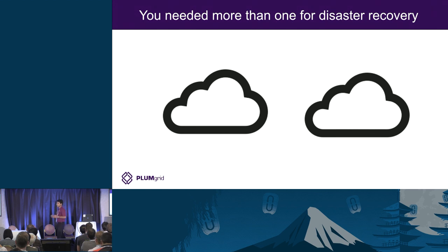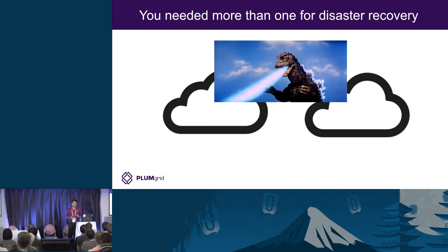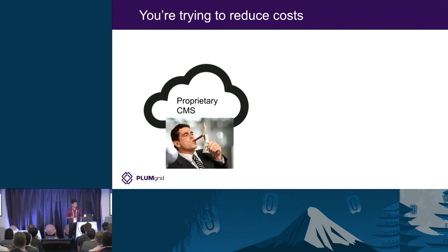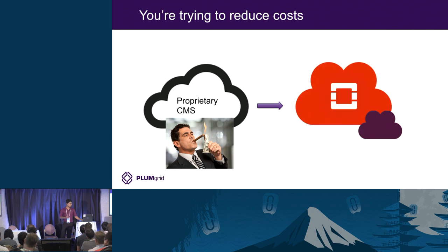Maybe you need more than one cloud for disaster recovery. Because you're smart — you know that one day something is going to happen to your data center, and then everybody's going to be talking about how much foresight you had to have created a backup cloud. Maybe you're trying to reduce costs. Customers are running a proprietary CMS that's really expensive, and they've been hearing about OpenStack and trying to figure out if they can move some workloads onto their OpenStack cluster slowly over time.